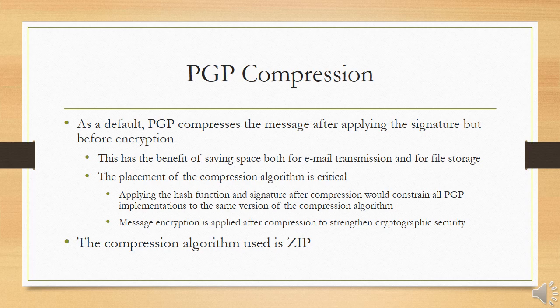PGP compression: by default, PGP compresses the message after applying the signature but before encryption. This has the benefit of saving space both for email transmission and file storage. The placement of the compression algorithm is critical. The signature is generated before compression for two reasons: it is preferable to sign an uncompressed message so that one can store only the uncompressed message together with the signature for future verification. If one signed a compressed document, it would be necessary either to store a compressed version for later verification or to recompress the message at verification time.